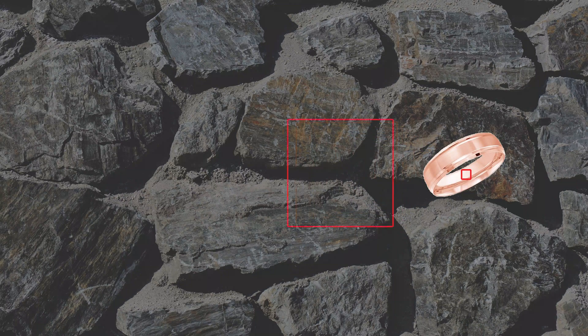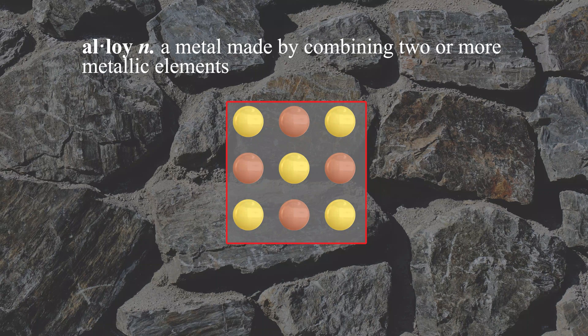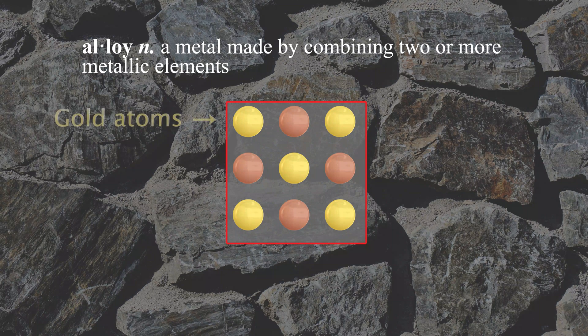One way the color of gold is changed is by mixing it with other metals. This mixture of metals is referred to as an alloy. Most gold jewelry is formed from alloys.